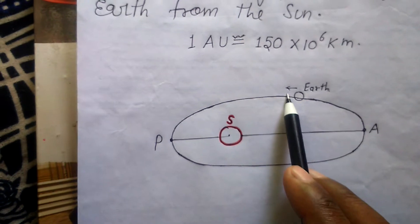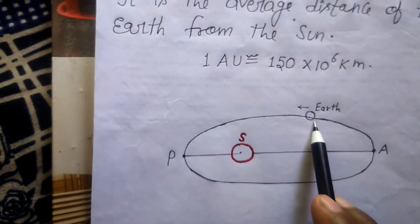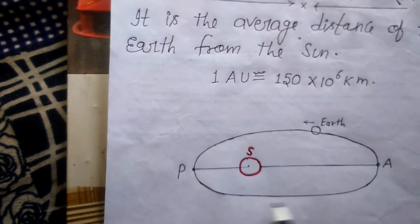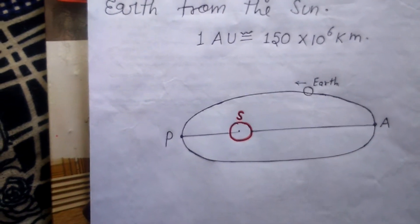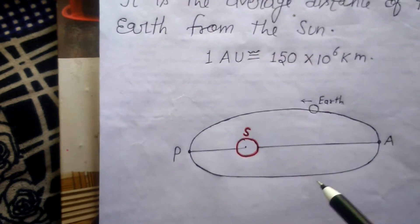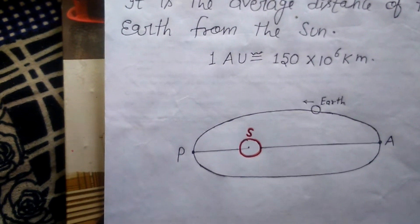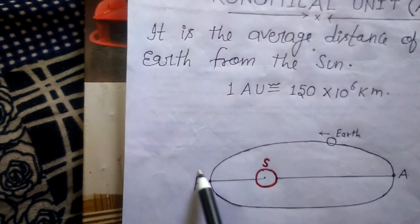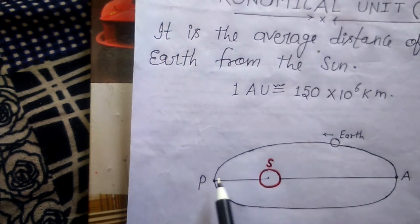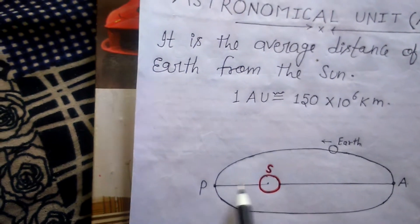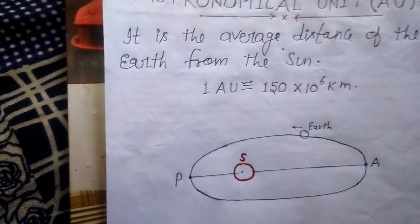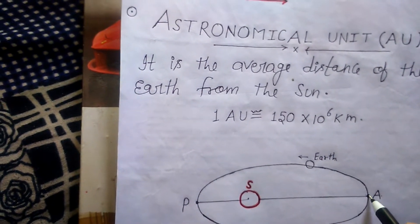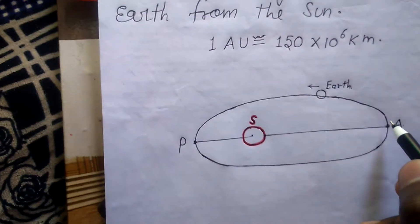Here, this is the earth and this is the sun. The earth revolves all around the sun, and its path is elliptical — not a complete circle. So if you measure the distance, there is a point A known as aphelion and a point P known as perihelion. The distance at perihelion is the minimum distance, and at aphelion it is the maximum distance.